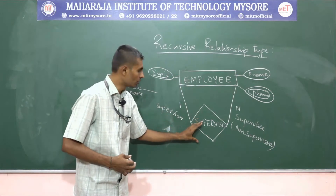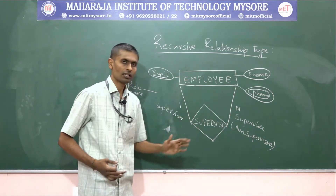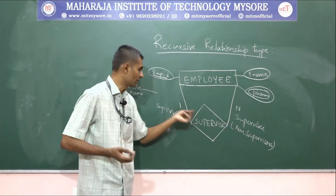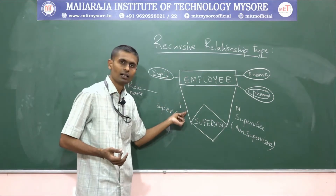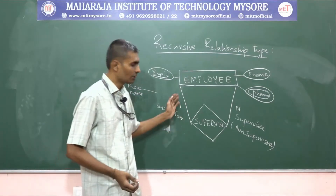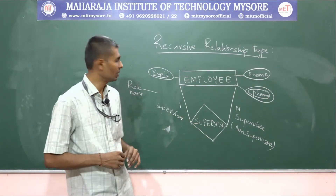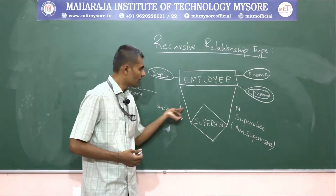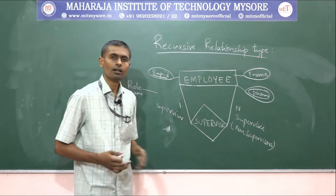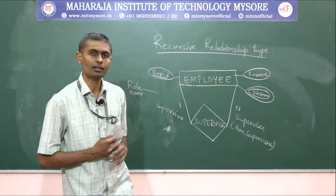The same entity type participates more than once in a relationship type. We also write cardinality ratio and participation constraint. Not all employees are supervisors and not all are supervised, so I have written partial participation on both ends. We can write total or partial participation depending upon the assumptions and the scenario. Then I will write the cardinality as usual, connecting the entity type with the relationship type — this is a recursive relationship type.